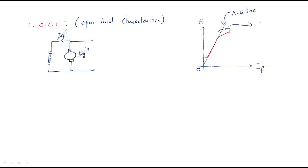The region where EMF becomes constant despite increasing field current is called saturation. The EMF present at zero field current is due to residual flux or residual magnetism. These two effects — saturation and residual magnetism — characterize the open circuit characteristics.